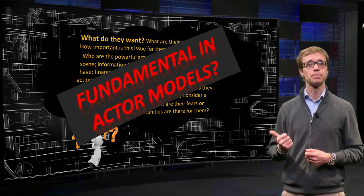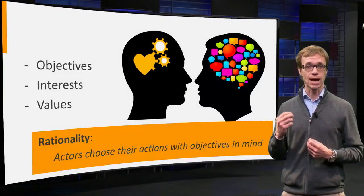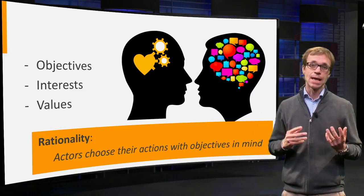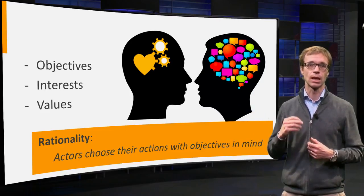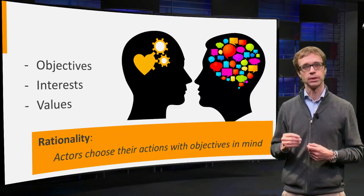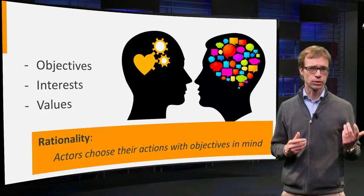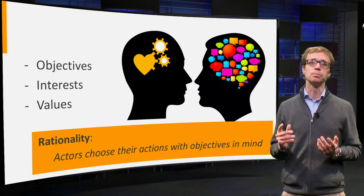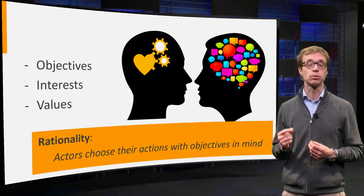The first assumption is that of rationality. We assume reasonable actors who choose their actions with certain objectives in mind. The objective might be as simple as hanging a painting on a wall, or it might be something more complicated. That we assume rationality does not mean that we assume actors who know everything. They may be misinformed, confused, or see only a part of the picture. We only assume that they have certain objectives, interests, or values that help to explain their actions.